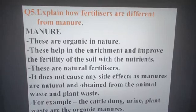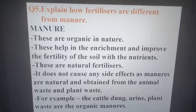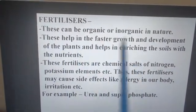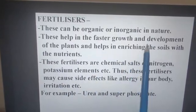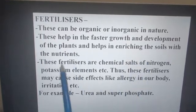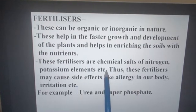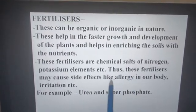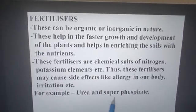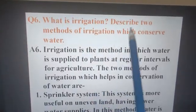For example, cattle dung, urine, and plant waste are organic manures. Fertilizers can be organic or inorganic in nature. They help in faster growth and development of plants and help in enriching the soil with nutrients. These fertilizers are chemical salts of nitrogen, potassium, and other elements. Thus, fertilizers may cause side effects like allergy and irritation in our body. For example, urea and superphosphate.